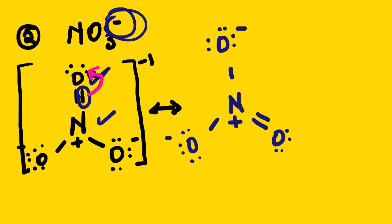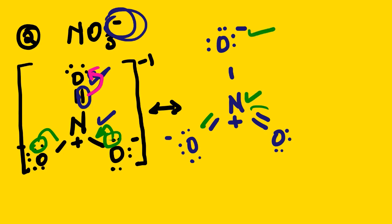Another resonance structure would be: instead of these electrons moving here, these ones will move the other way. So our double bond will be here — that would be the third resonance structure. In this case you can see the formal charges are the same: negative one, negative one, and zero for all three structures. So there is no single most stable resonance structure.